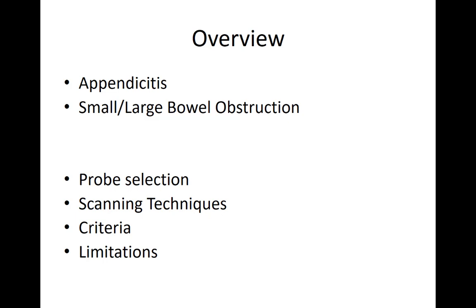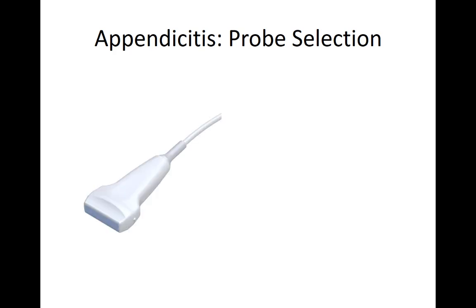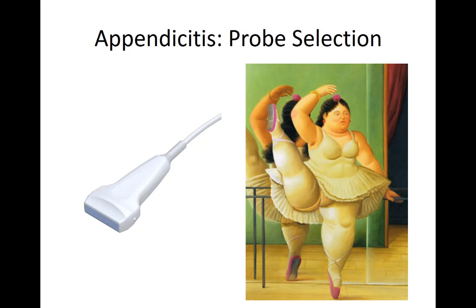The first thing about appendicitis is which probe to select. I always start with the linear probe. The reason is that when the appendix is inflamed and giving you that focal peritonitis for the classic right lower quadrant pain, the structure is going to be fairly superficial — it's going to be up and annoying the abdominal wall. You're going to have the best luck in skinny patients, which is why it's so appropriate for pediatrics or skinnier patients. You can actually try the curvilinear probe, though you may not have as high a success rate.